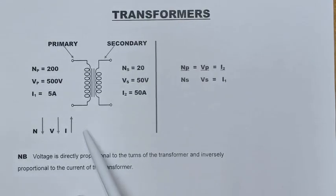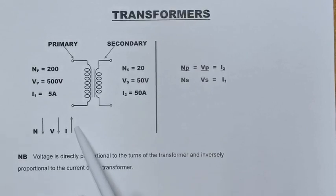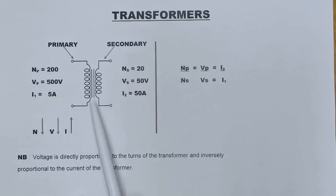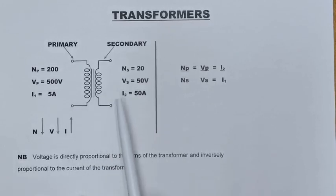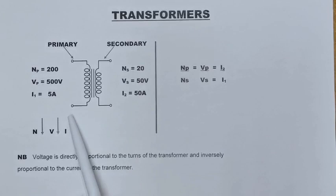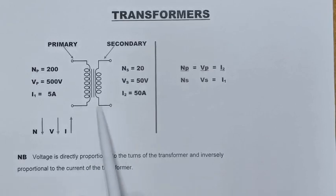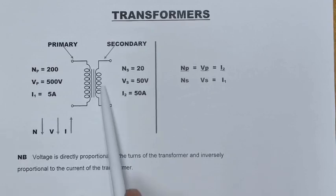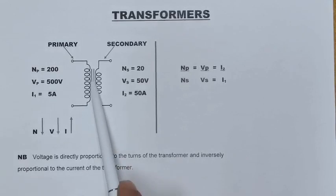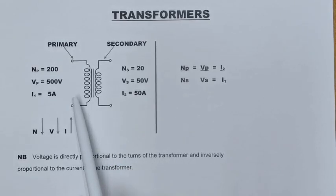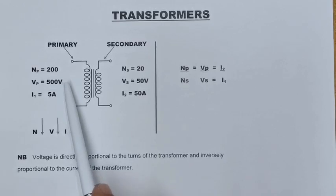Welcome back to another interesting topic. Today we're going to have a look at transformers and what transformers do. Transformers are basically devices that transform AC energy from the primary side to the secondary side — they will either step up or step down that voltage. As you can see, we're actually working with a step-down transformer, as the turns on the secondary are less than the turns on the primary side.